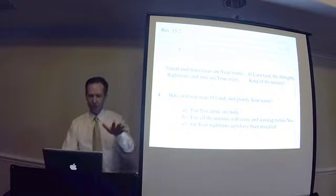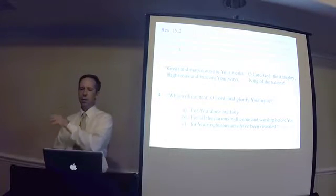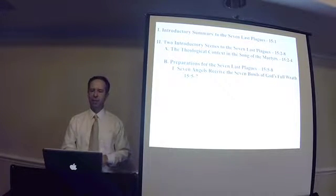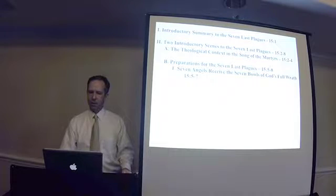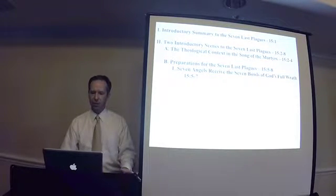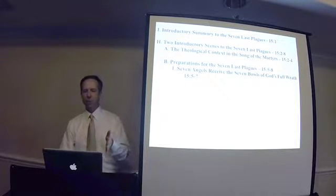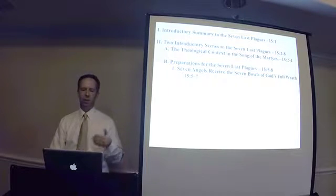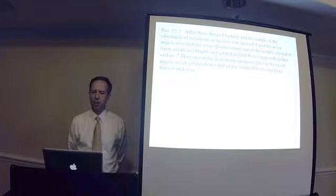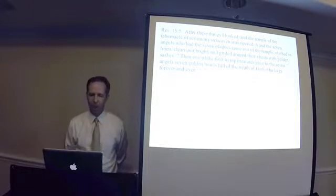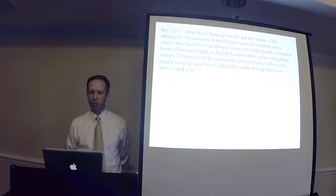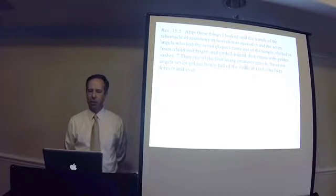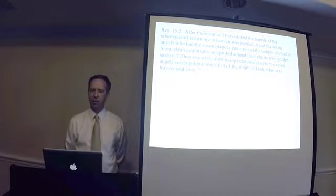Okay, so now the content of that song will be accomplished in the following chapters, but we now need to go to the second and final scene that prepares us for the last seven plagues. And the final scene has two parts. The first one is the seven angels receive the seven bowls of God's full wrath, which is verse five through seven. So let's read that passage. It says, and after these things I looked in the temple of the tabernacle of testimony in heaven was opened and the seven angels who had the seven plagues came out of the temple clothed in linen, clean and bright and girded around their chest with golden sashes. Then one of the four living creatures gave the seven angels seven golden bowls full of the wrath of God who lives forever and ever.